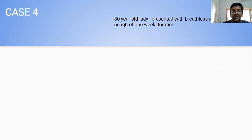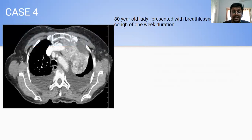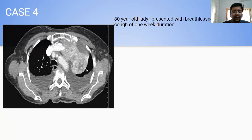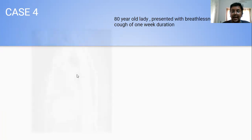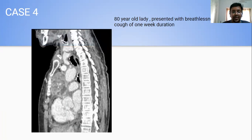Case 4 was an 80-year-old lady who presented with breathlessness and cough for one week. CT revealed an irregularly marginated, heterogeneously enhancing solid-cystic lesion with predominant solid component, showing heterogeneous post-contrast enhancement with erosion of adjacent bones — especially the rib and left half of the manubrium sterni — and vascular infiltration. Bilateral pleural effusion was also noted. Coronal and sagittal images revealed chunky calcifications within the lesion. This turned out to be a type B3 thymoma.